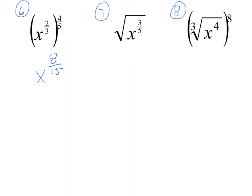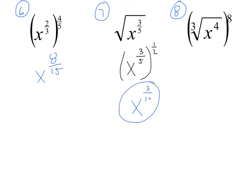You're going to do problems seven and eight. For seven, realize this is the same thing as x to the three-fifths power raised to the one-half power. Pause and finish seven and then do eight. For number seven, you should have x to the three-over-ten — x to the three-tenths power.